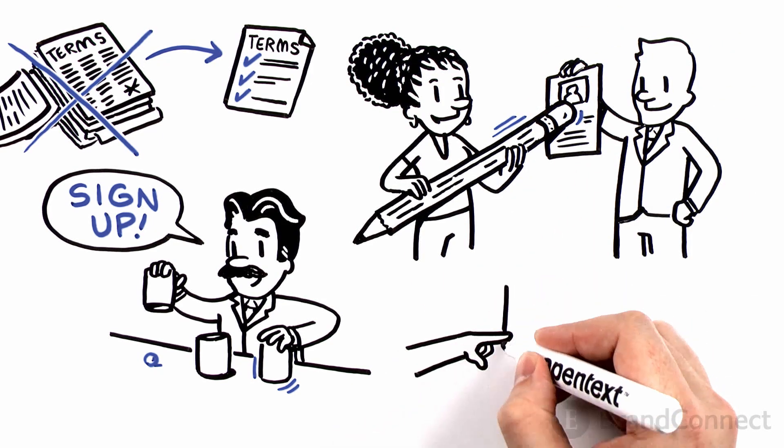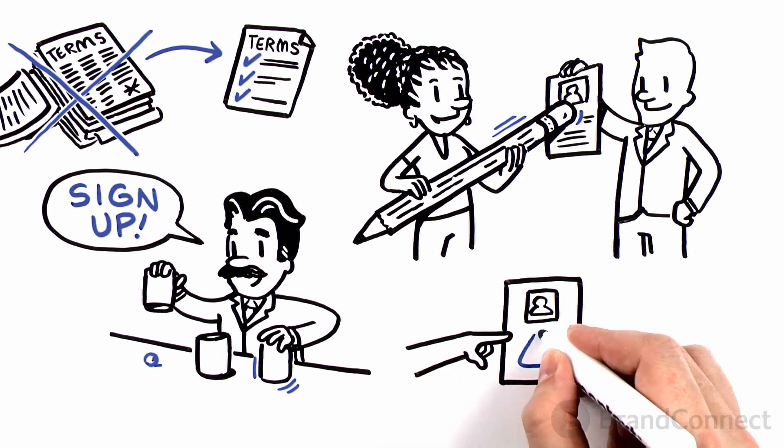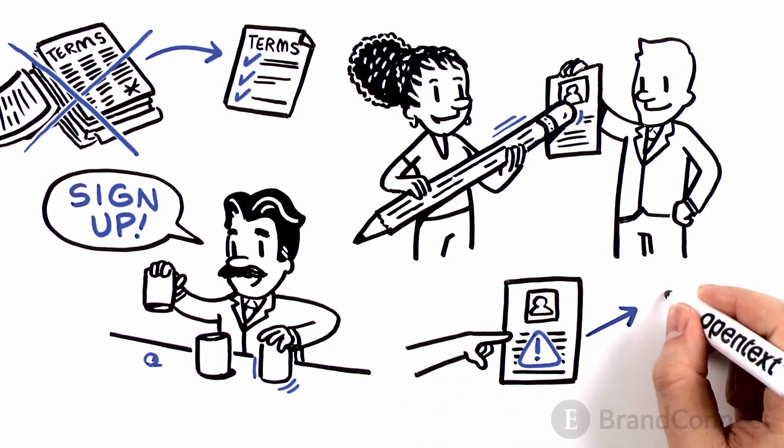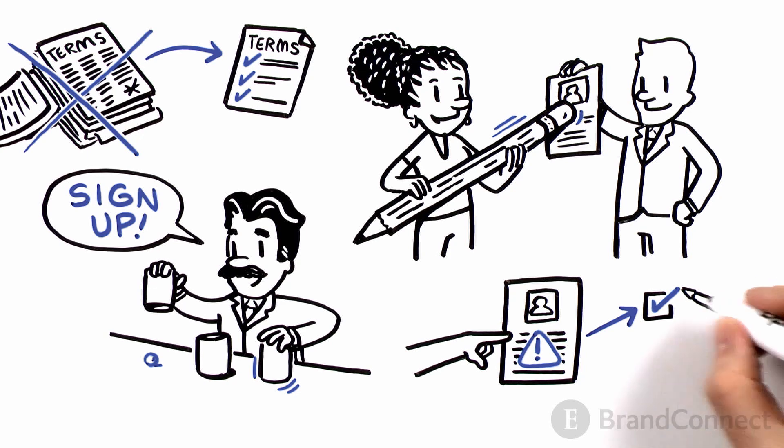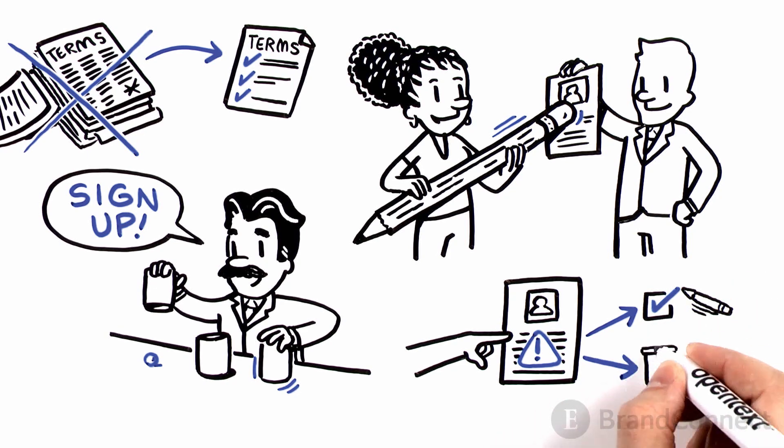If companies are holding out-of-date, inaccurate, or unwanted personal data, people will have the right to demand that the companies correct it, or even erase it entirely.